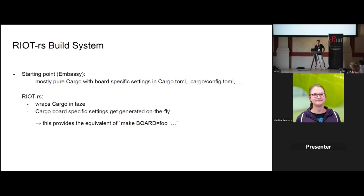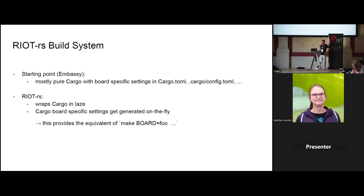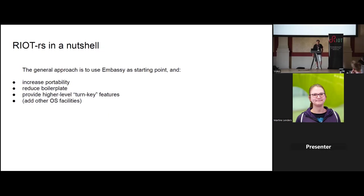The build system: most embedded Rust projects use a Cargo-based build system, but at some point there's hard-coded board-specific stuff because Cargo has the concept of architectures like ARMv7 or RISC-V, but it doesn't know about specific boards like the nRF52DK. In RIOT-rs we've wrapped Cargo in a different build system called Laze, where we encode all board and MCU-specific information - which target, which flasher, etc. - and generate the Cargo configuration on the fly. This gives us the ability to compile any example for any board by just naming the board, the same way RIOT works.